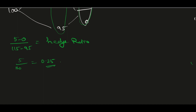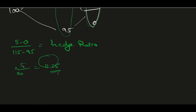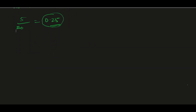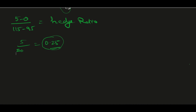What does this mean? If you are shorting a call option, for every call option you should buy 0.25 of a stock. Let's see further how it works. I'll convert this formula into notations.